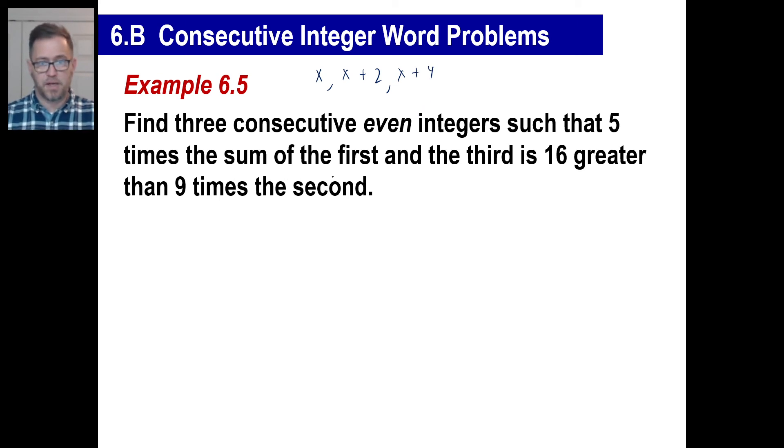5 times the sum of the first and the third. Okay, well, 5 times the sum of the first, that's an X, and the third, that's another X plus 4, so 2X plus 4. This is 16 greater than 9 times the second. Well, 9 times the second is 9 times X plus 2. But this is 16 greater. This part is heavier, you know, if you want to look at a seesaw. So we're going to have to add 16 to this side to make it even.